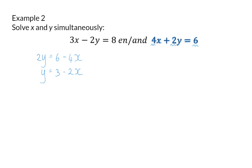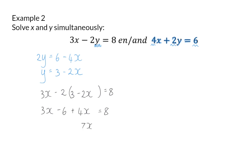Now I can substitute this value for y into y in my first equation. Again, I write the first equation with a bracket where y should be, and then I substitute 3 minus 2x into the bracket. Now I can multiply the minus 2 into the bracket, and here I have a linear equation to solve. This will give me 7x is equal to 14, and x will then be 2. Now I can substitute this x value back into my adjusted equation, and that means I will have 3 minus 2 times 2, which will give me a y value of minus 1.